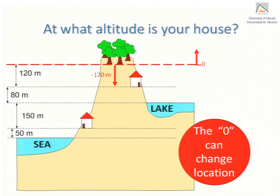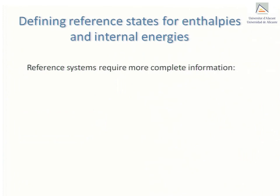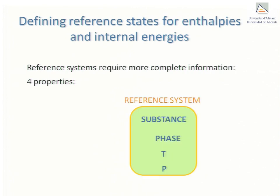This is the fundamental reason why it is necessary to specify the actual reference altitude used to locate your house. Defining reference states from which to measure enthalpies and internal energies requires more complete information. There are four properties that need to be specified in order to do so: the identity of the substance, the phase it's in, its temperature, and its pressure.